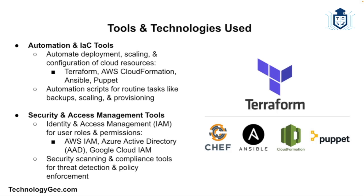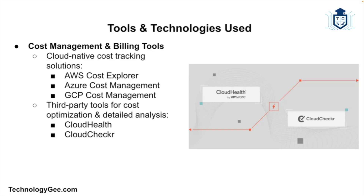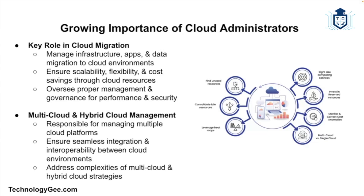For security and access management, tools such as AWS IAM, Azure Active Directory, and GCP IAM are used to manage user access, roles, and permissions. Security scanning and compliance tools help cloud admins maintain data protection standards and detect potential security risks. For cost management, tools like AWS Cost Explorer, Azure Cost Management, and GCP Cost Management help admins track and optimize cloud spending. Third-party tools like CloudHealth and Cloud Checker provide additional cost analysis and reporting features.